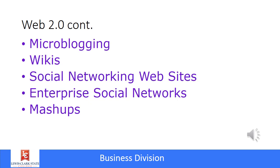Some of the other features with Web 2.0 include microblogging. Those are just real small, short messages, and Twitter is probably one of the best examples of that. Then there's wikis, which are made up entirely of user-generated content, and Wikipedia is an example of that.